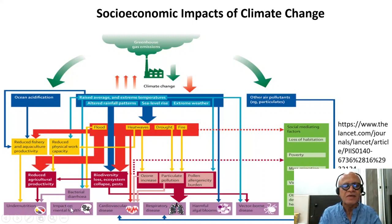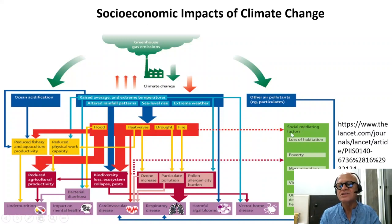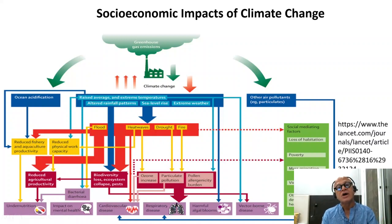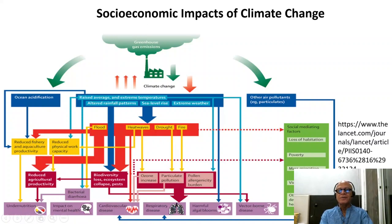There is plenty of evidence that climate change also impacts mental health. In the socio-economic context, you have social mediating factors like loss of habitation, poverty, mass migrations, internal displacements, and cross-boundary climate migrations that are already happening. Violent conflicts — things like the Arab Spring, the Syrian war, Rohingya issues, and water issues in many places — are all potentially related to climate change factors, and there are studies doing detection and attribution of these events.